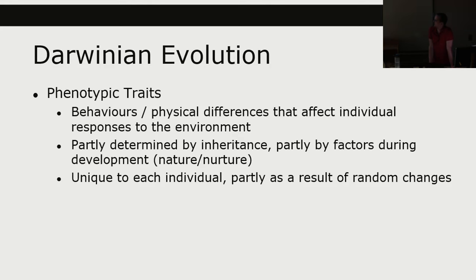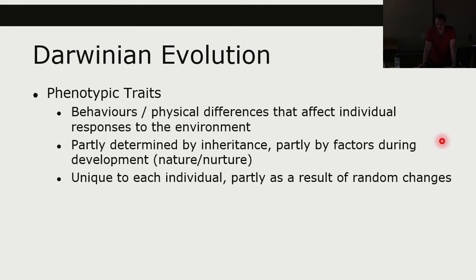There are some definitions here — they're not that bad. Phenotypic traits are the behaviors or physical differences that affect individual responses to the environment. They are partly determined by inheritance, partly by factors during development — that's nature versus nurture. They are unique to each individual and are partly the result of random changes. Phenotypic traits include things like strength, speed, and intelligence.